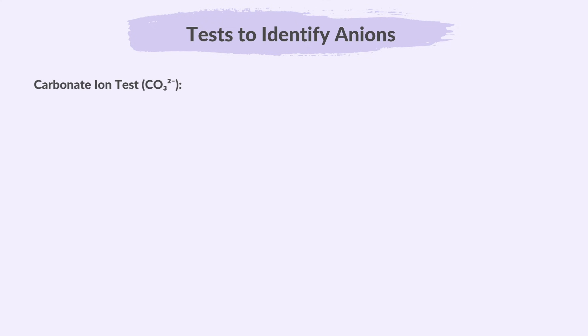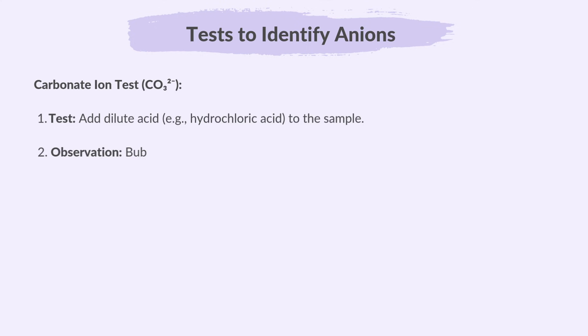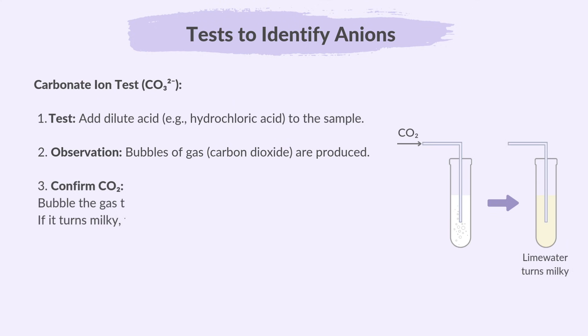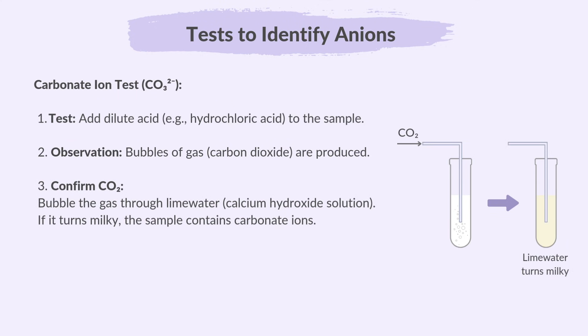Let's look at the carbonate ion test. Add dilute acid — for example hydrochloric acid — to the sample. Bubbles of gas, that is carbon dioxide, are produced. To confirm that it is carbon dioxide gas, we have to bubble the gas through lime water or calcium hydroxide solution.